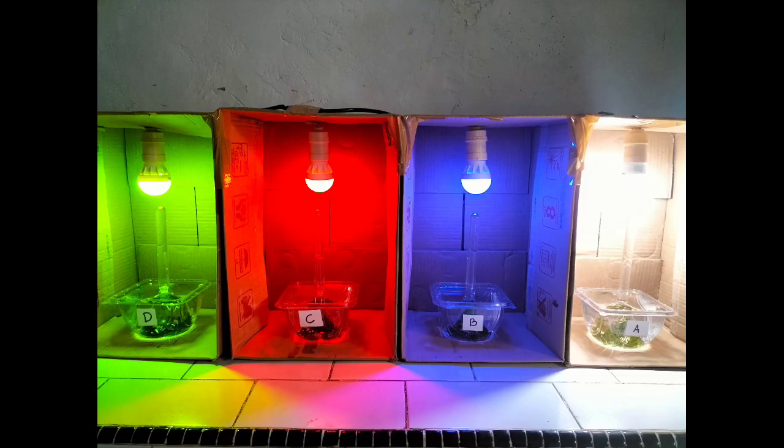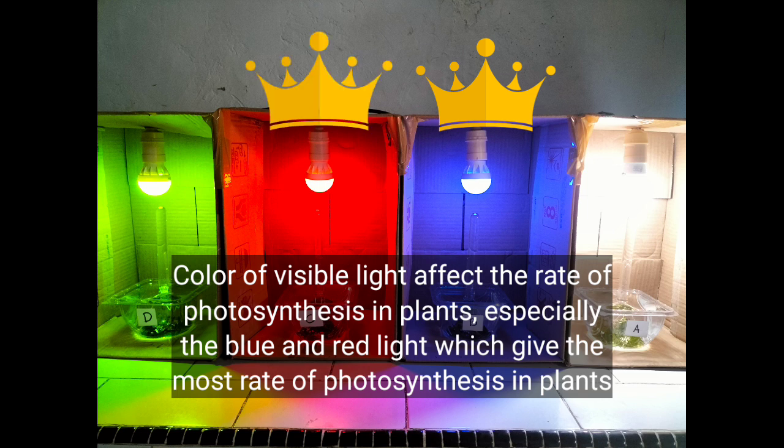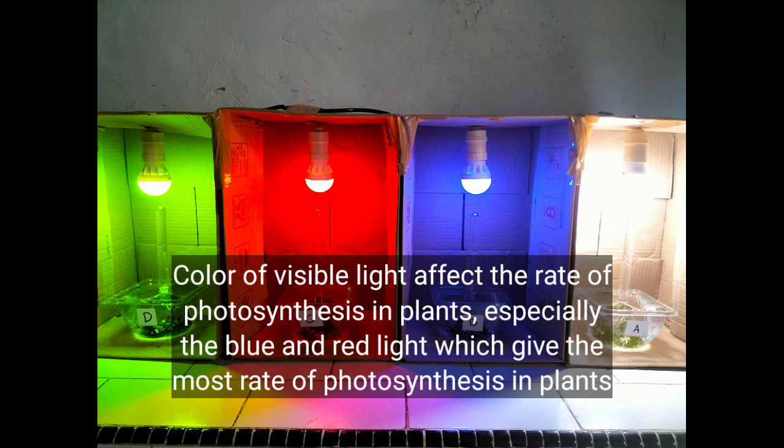From the experiment, we can conclude that the color of visible light affects the rate of photosynthesis in plants, especially blue and red light, which gives the most rate of photosynthesis in plants.